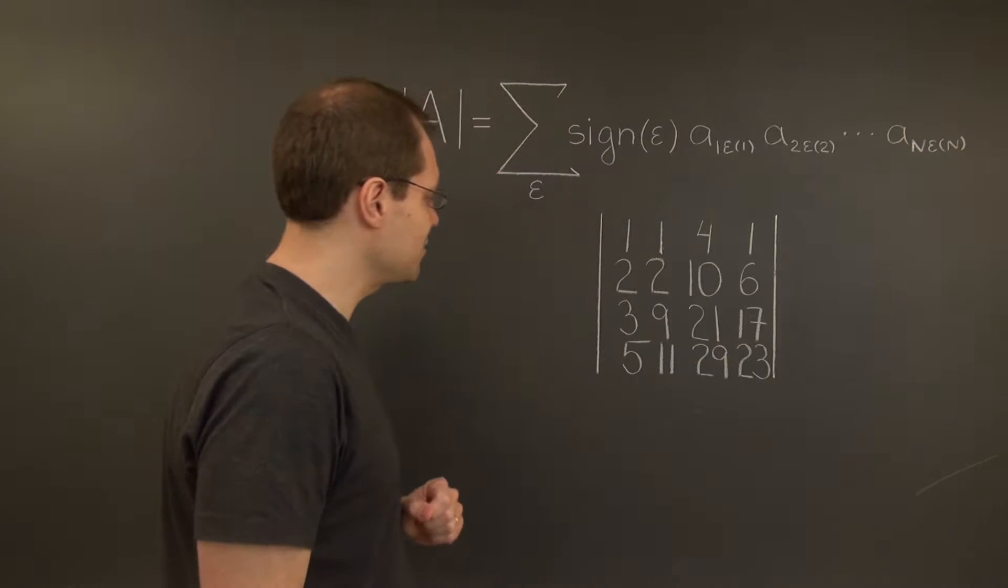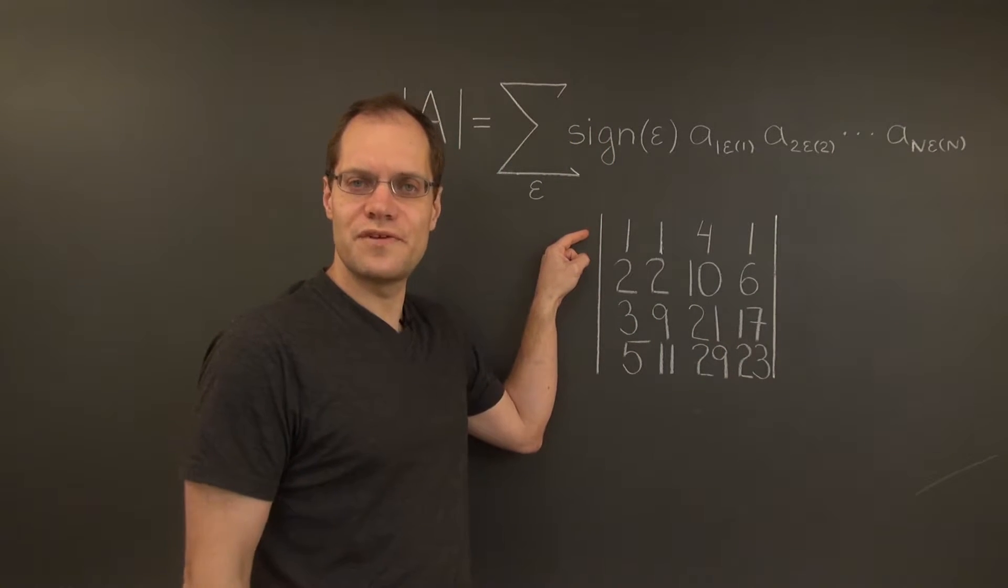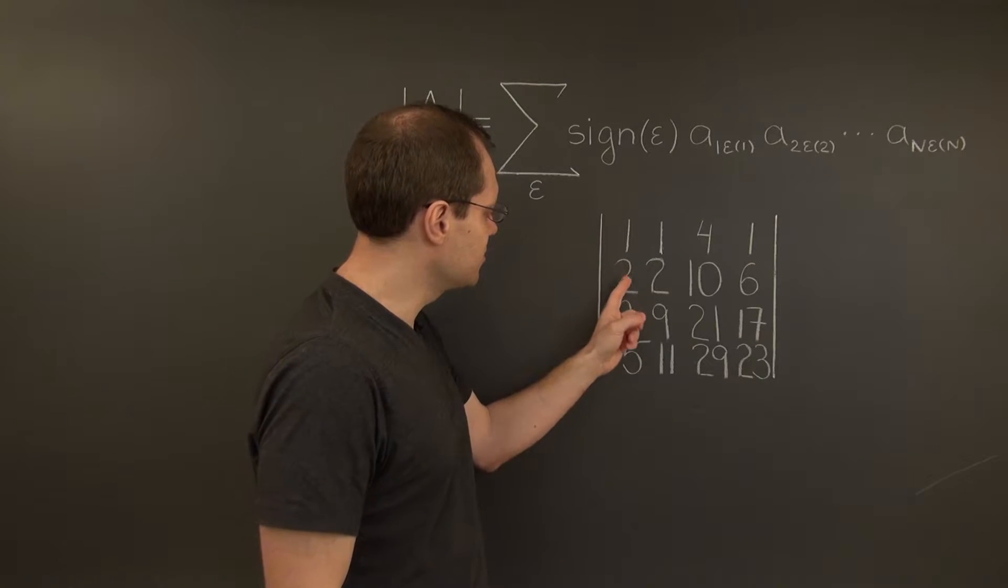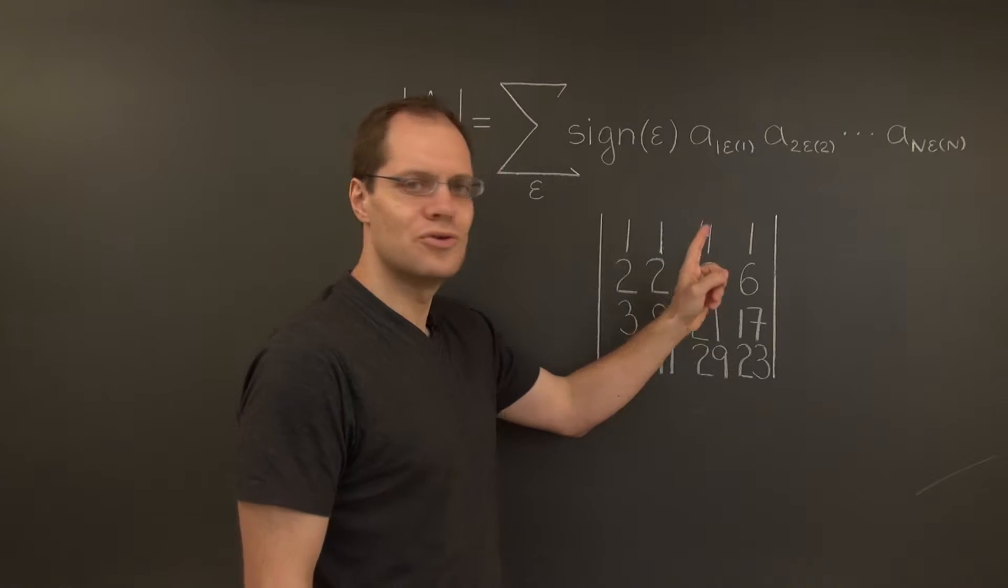The first step in Gaussian elimination is to subtract 2 of the first row from the second. And the result is 0, 0, 2, 4.